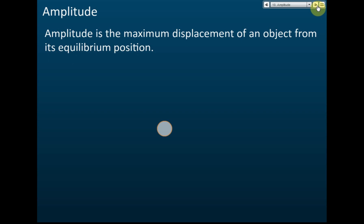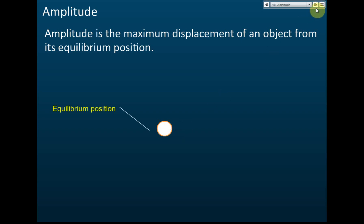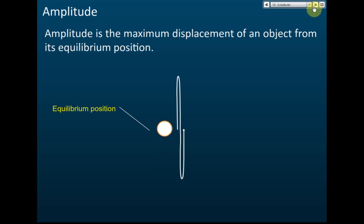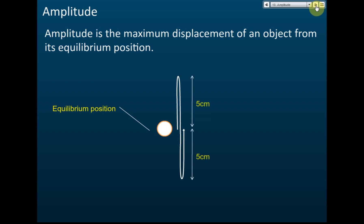Let's say we have an object at the equilibrium position. This object is oscillating — it goes up, then down to the bottom, and back to the center. This is one complete oscillation: going to the maximum, then to the bottom, and back to the center.